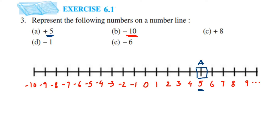The next number is minus ten — a negative integer — so it comes on the left hand side. I'll write capital B here. Then plus eight is a positive number, so it comes on the right hand side — that's C.